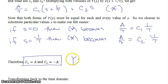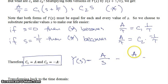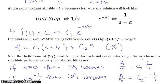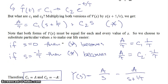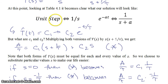Substituting C1 equals A and C2 equals minus A back into the partial fraction form, Y(s) equals A over s minus A over (s plus 1 over tau). With Y(s) in that form, we can use the Laplace table — specifically those two entries — to transform Y(s) back into the time domain.